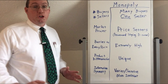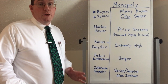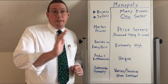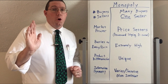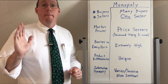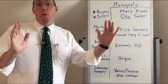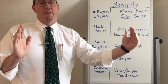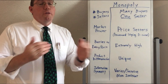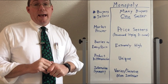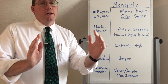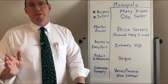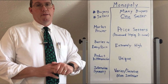Now let's talk about our second market structure: monopoly. If perfect competition is at one extreme end of the spectrum where sellers have no power at all, monopoly is at the all the way at the other end, where the monopoly has all of the power. The other two structures we'll investigate next fall in the middle, showing qualities of both perfect competition and monopoly.